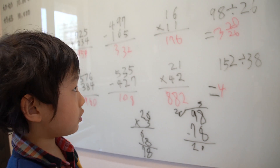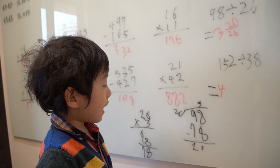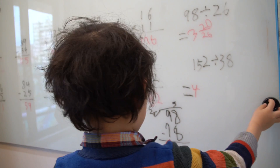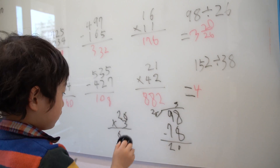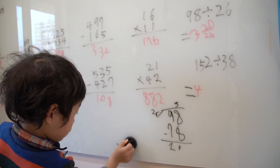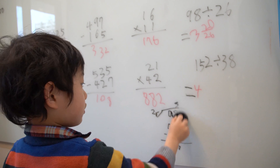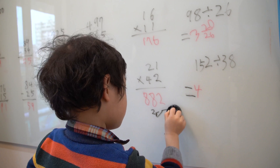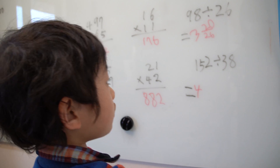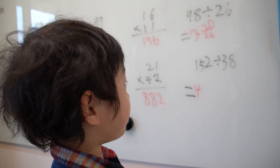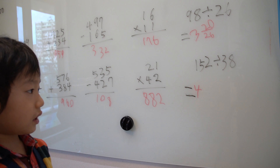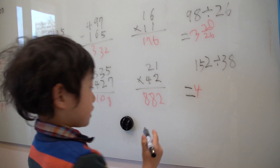So it's 3 and 20 over 26. 152 divided by 258. And 20 plus 4. Because...